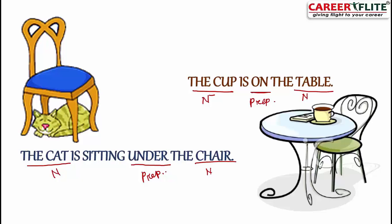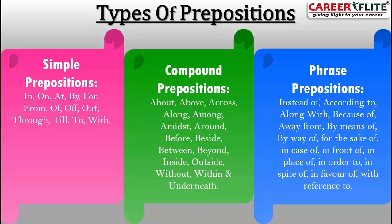So we have seen two prepositions: 'on' and 'under'. Now let's look at the types of prepositions. There are three types: simple prepositions, compound prepositions, and phrase prepositions. Simple prepositions include: in, on, at.